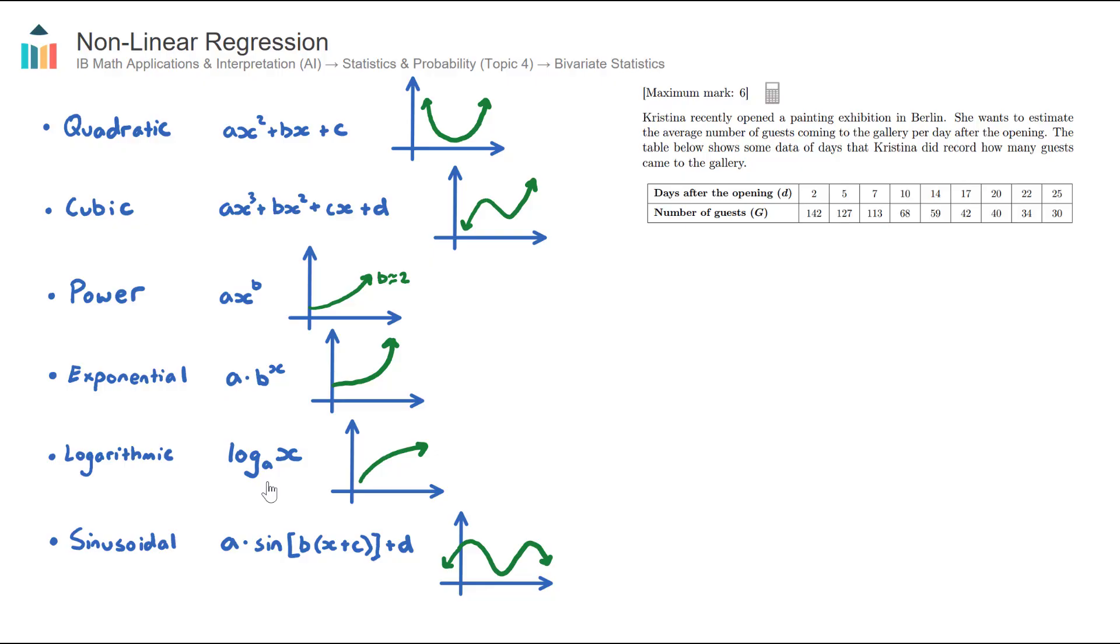That way, when you see a scatterplot of a given set of data, you can say, okay, that kind of fits an exponential curve or a sinusoidal curve or a quadratic curve. I'm now going to talk through my thought process when I encounter one of these types of problems. And I've pulled out a question from the IB Question Bank here.